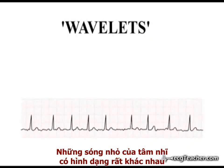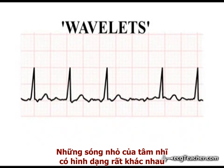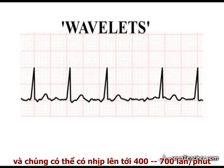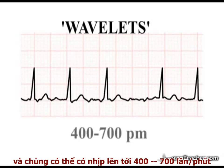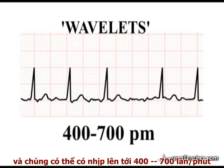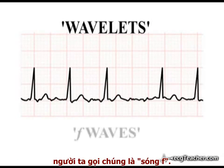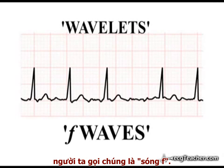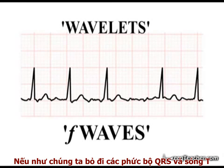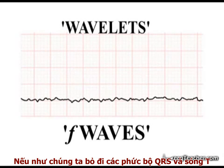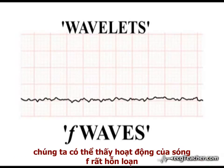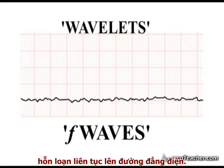Atrial wavelets produce deflections of variable morphology, and these deflections, occurring at a rate between 400 and 700 per minute, are termed F-waves. If we remove the QRS complexes and T-waves, we can see that F-wave activity results in a continuous, chaotic disturbance of the isoelectric line.